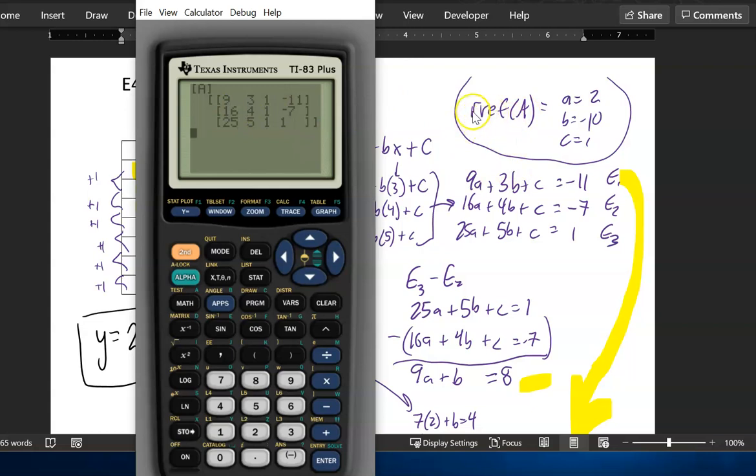And I still want to use that command RREF, reduce row echelon form. And so I'm going to go back into the matrix menu and now I'm going to choose math because these are the math commands I can do in that matrix.